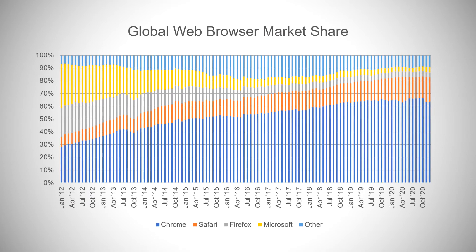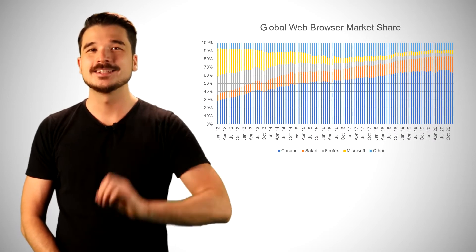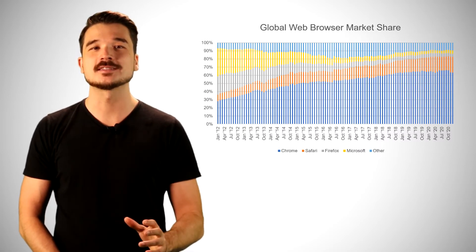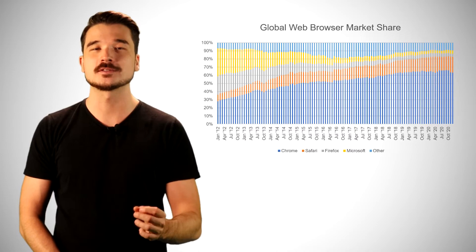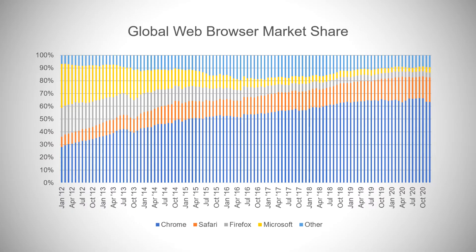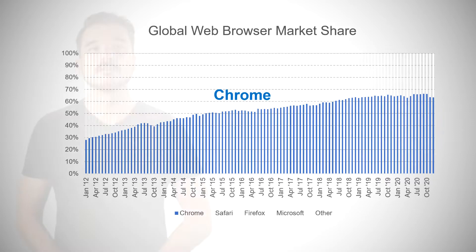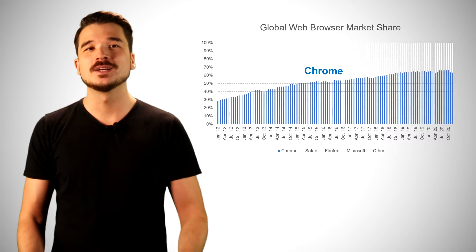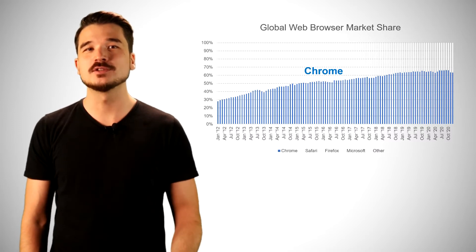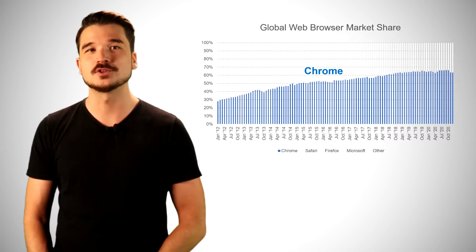Step one is distill. There are many noteworthy trends buried within this chart that we could choose to focus on, but we need to distill down to the most critical insights that are valuable to our audience. Today we'll design for YouTube viewers. The trend that stands out most is the rapid rise in Google Chrome's market share, which has more than doubled in the last eight years. For a broad audience like YouTube, this well-known product's explosive growth is the most relevant story.